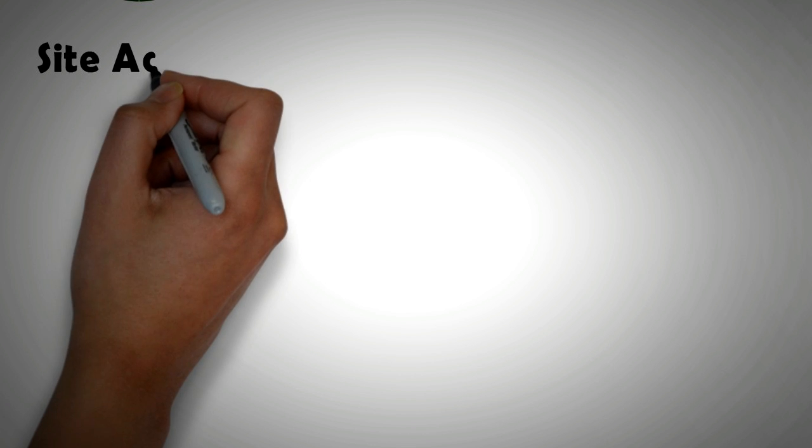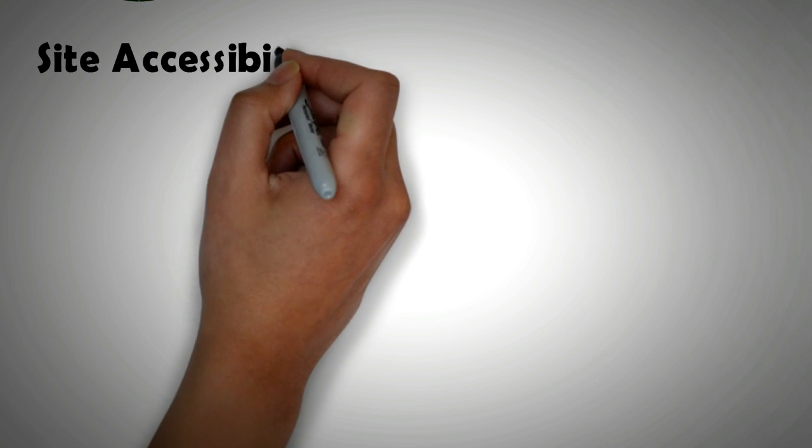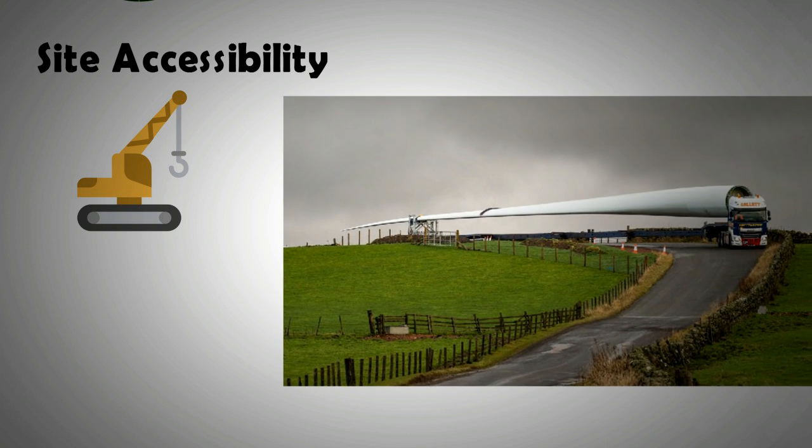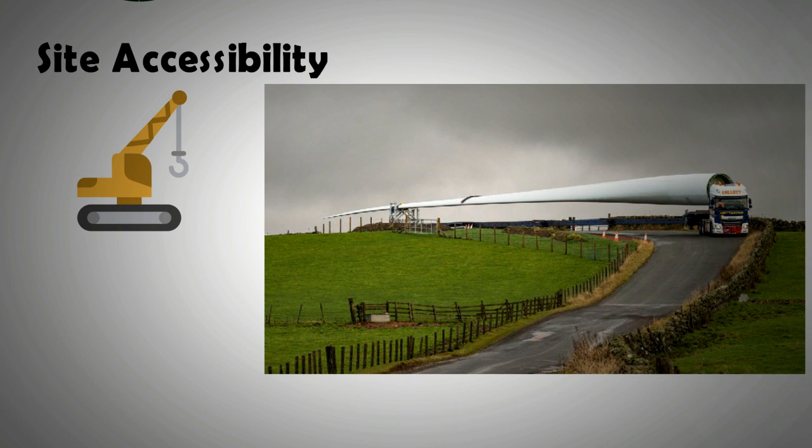Another factor to consider is site accessibility. A site has to be accessible not only for the turbine parts but for the groundwork machinery that needs to install them, that is diggers and cranes. This is a particularly big issue for larger wind turbines that can have blade sizes of more than 80 meters. Large components have to be transported on longer heavier vehicles or LHVs. These special trailers have a huge turning radius.